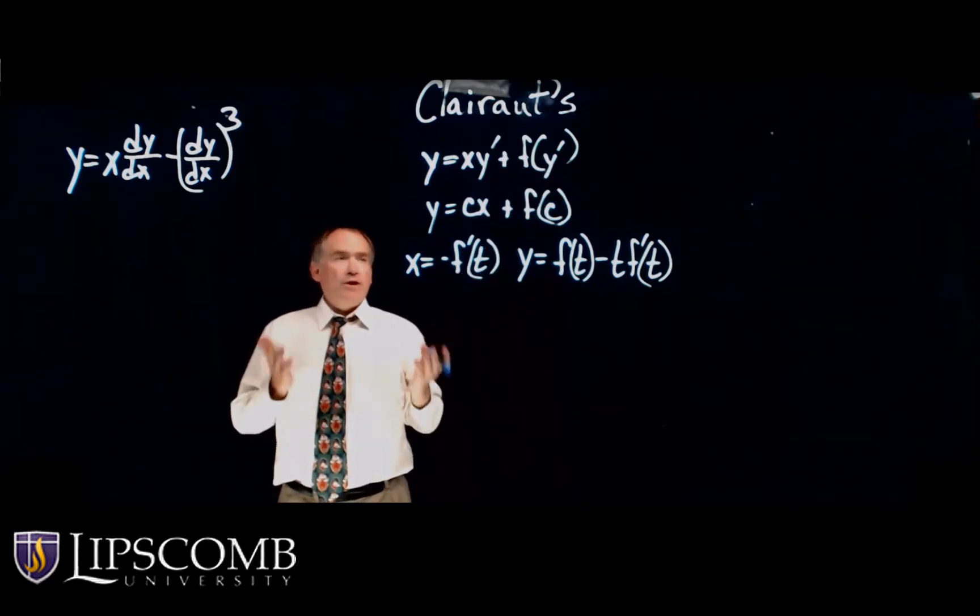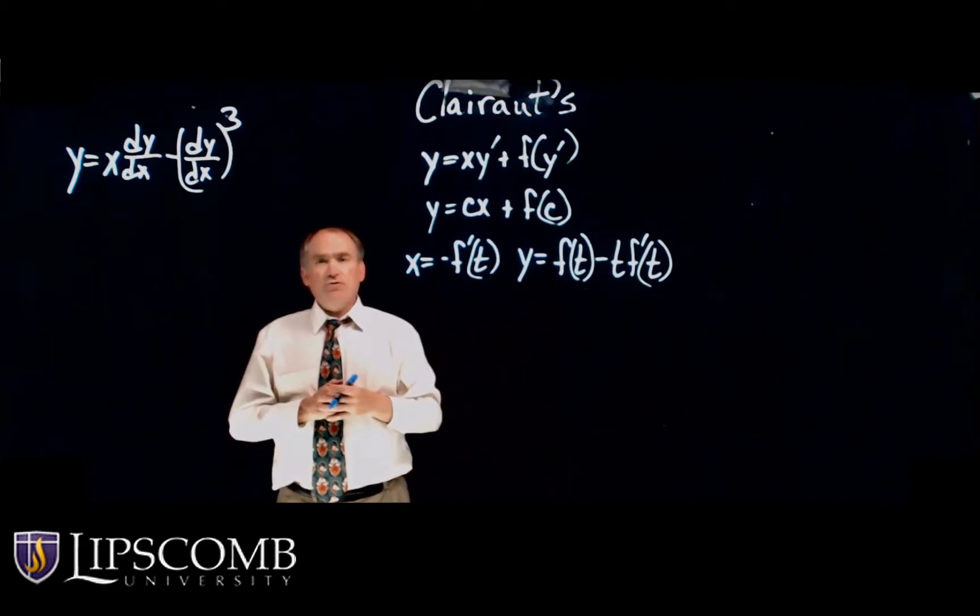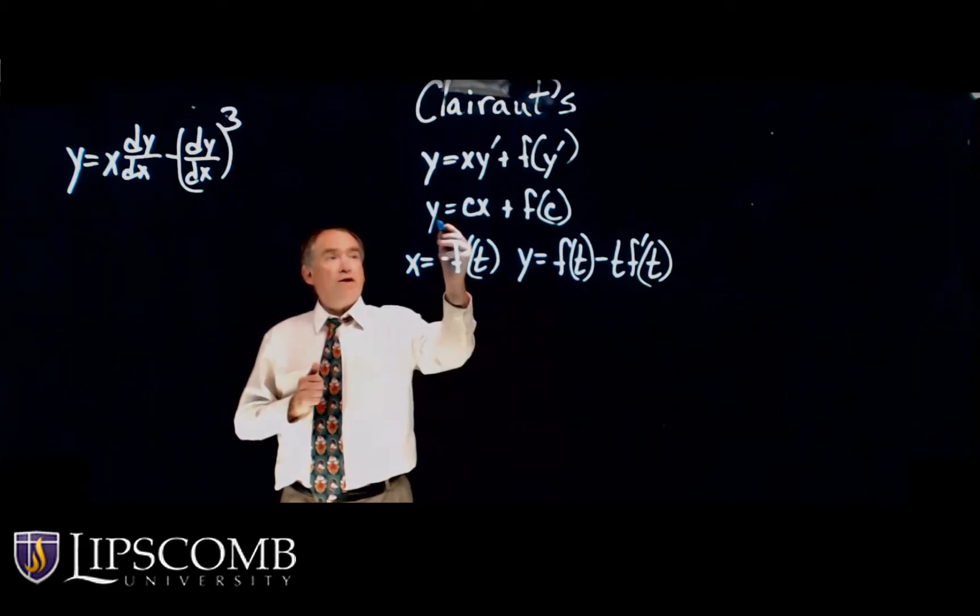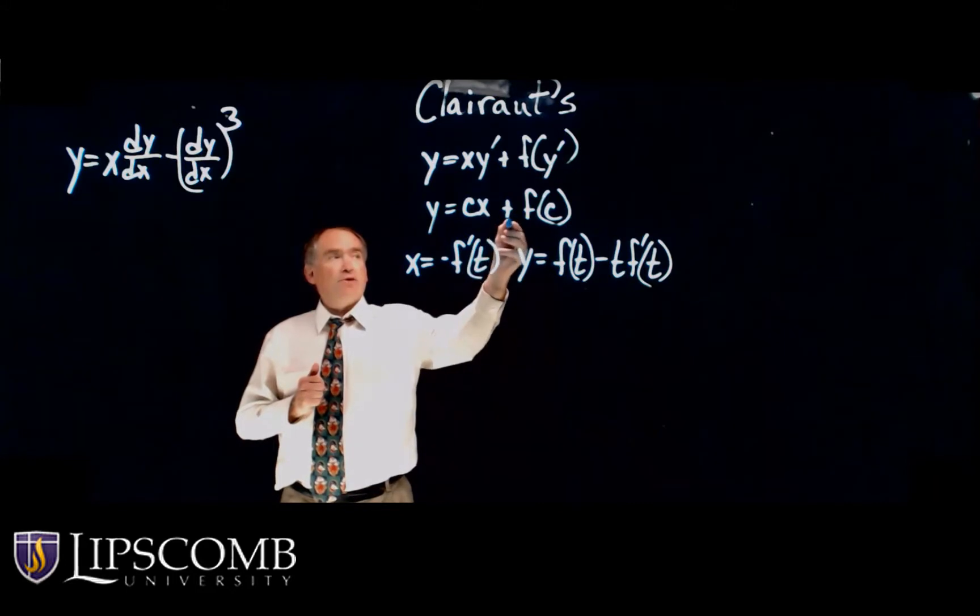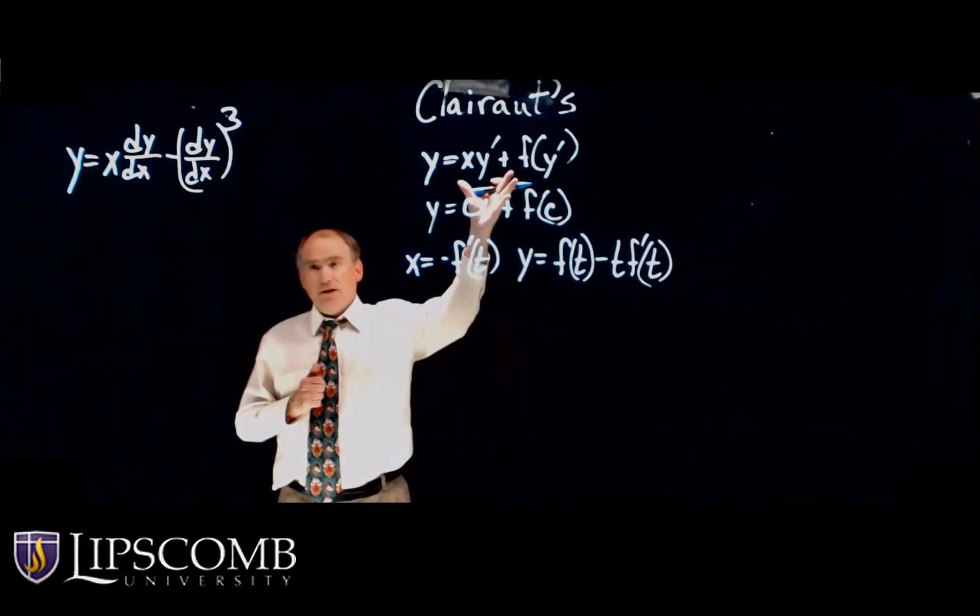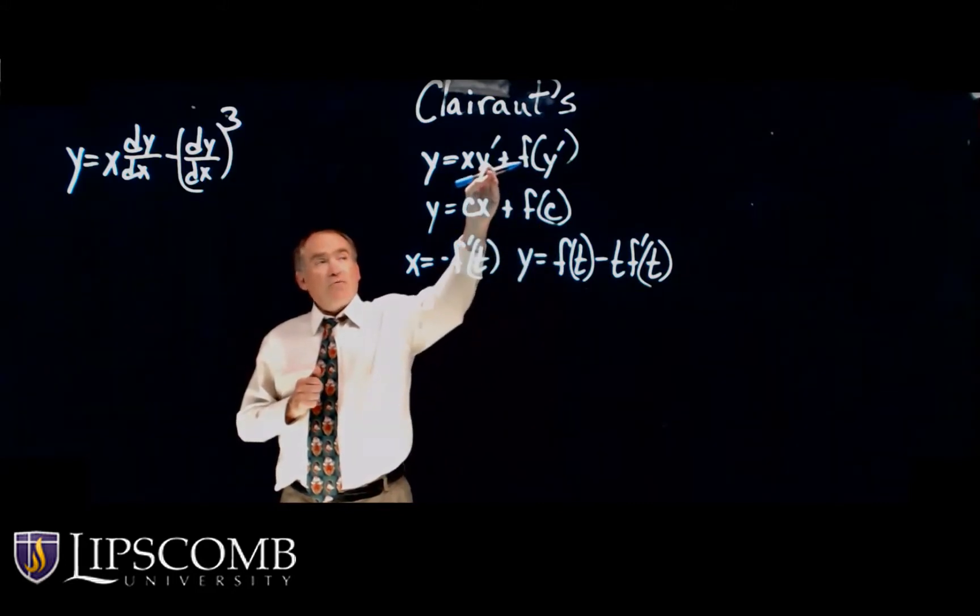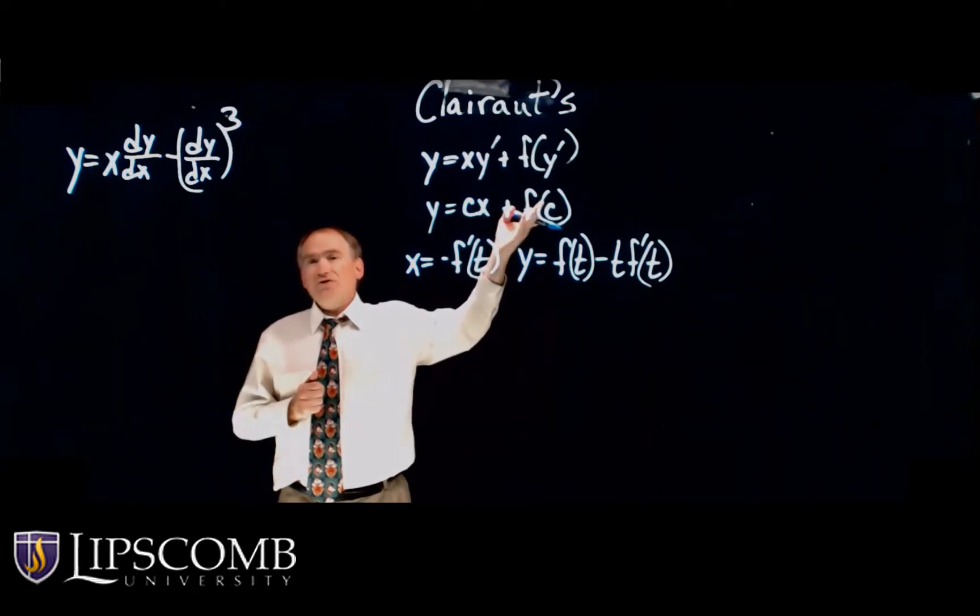And we know the form of the solutions for Clairaut's equation. It's Y equals C times X plus F of C. So basically, all I do is replace the Y prime with the arbitrary constant C.